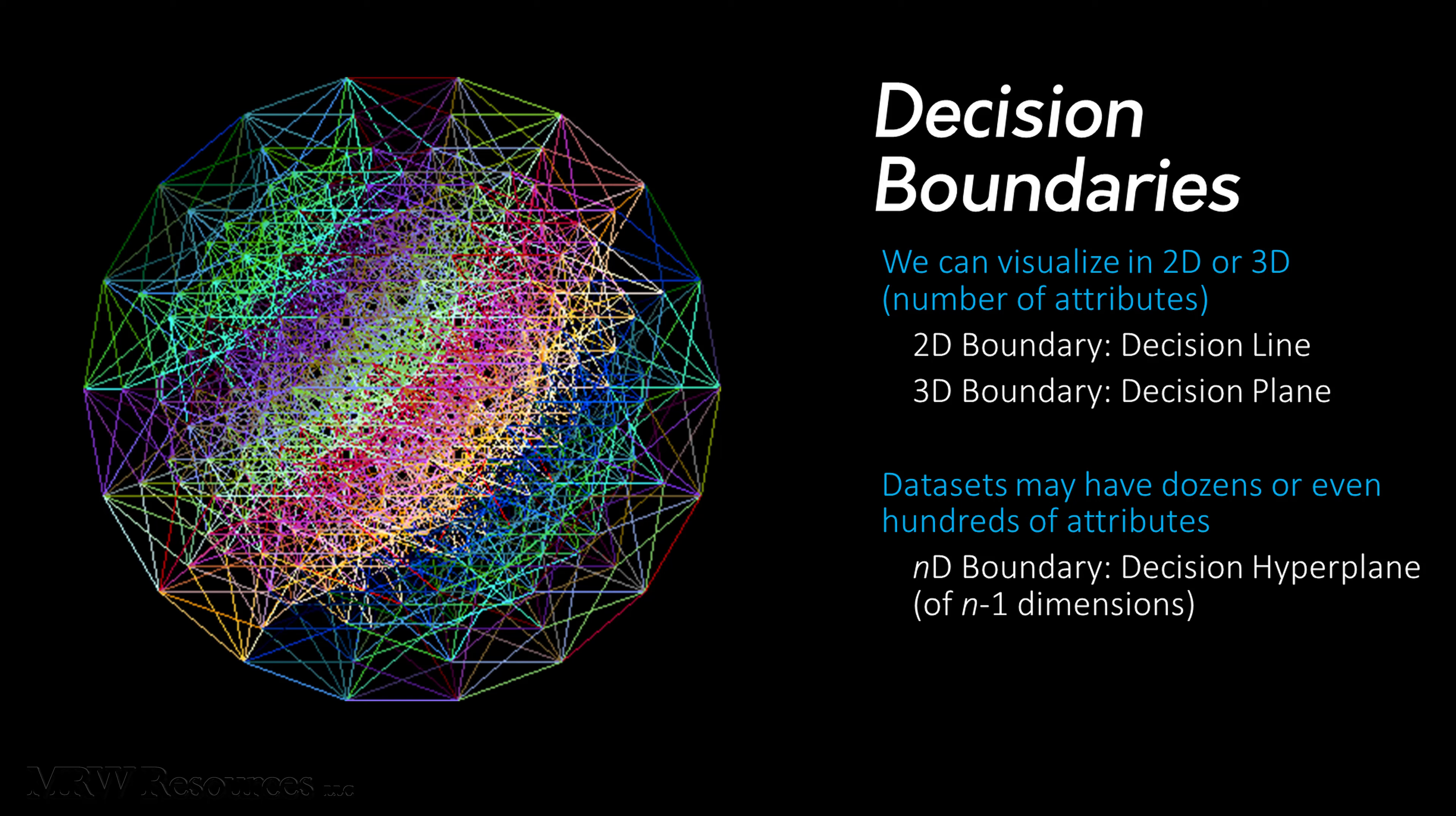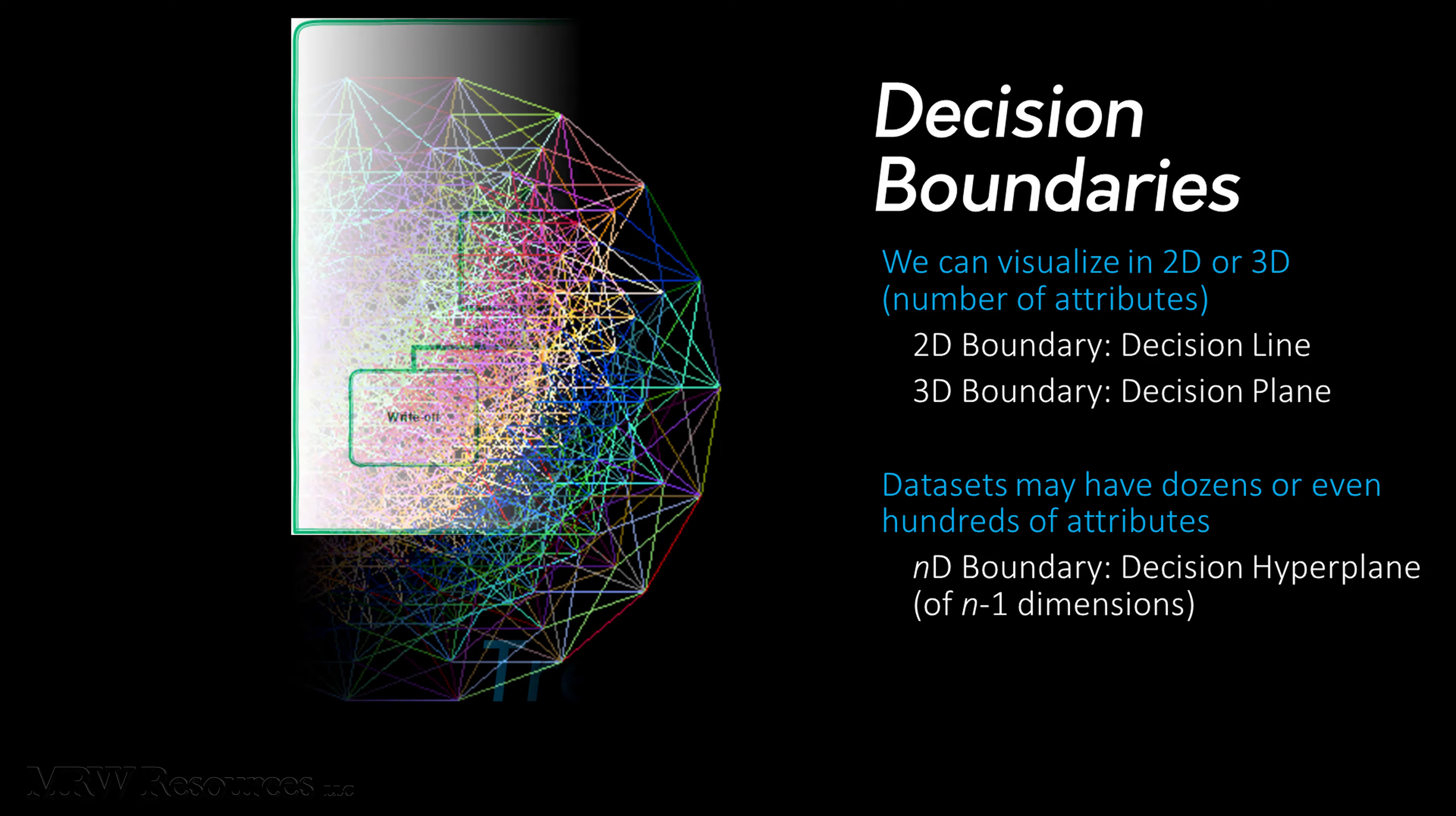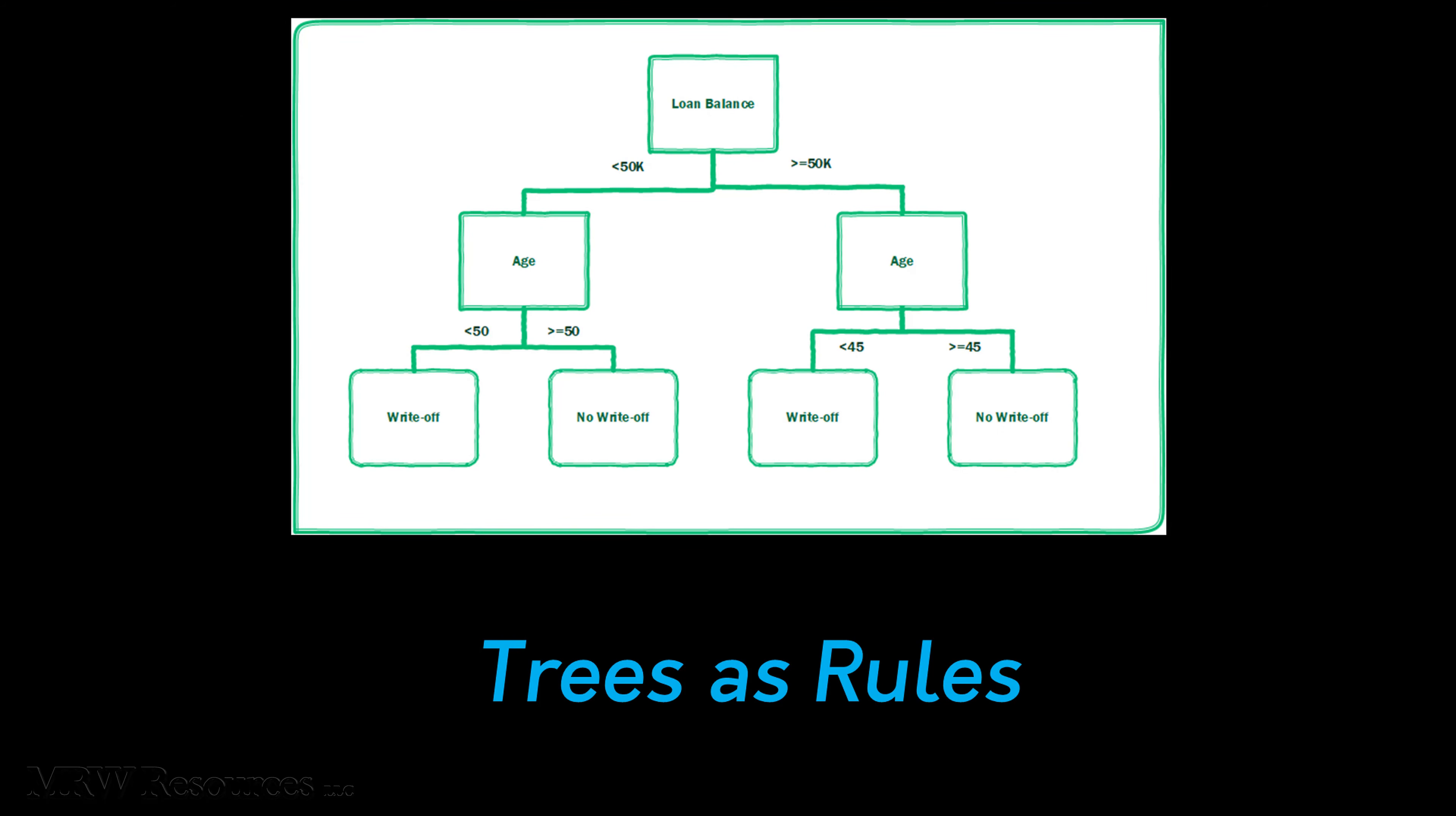Now, the ability to convert that decision tree into a set of logical rules is one of the key attractions of tree-based approaches. Not only can we eyeball the tree diagram and follow the path down to our decision node, we can also describe that path to each node in a way everyone will understand.